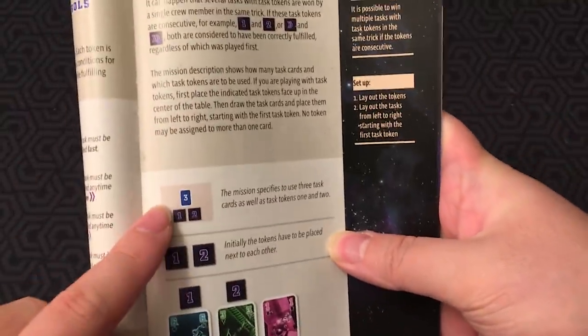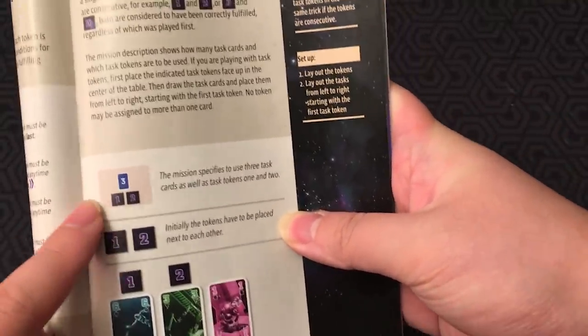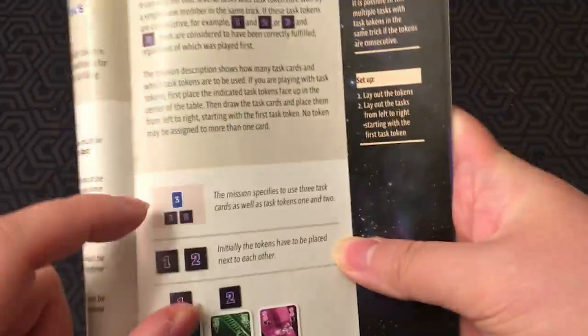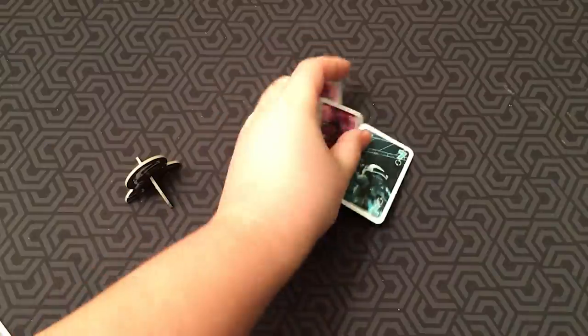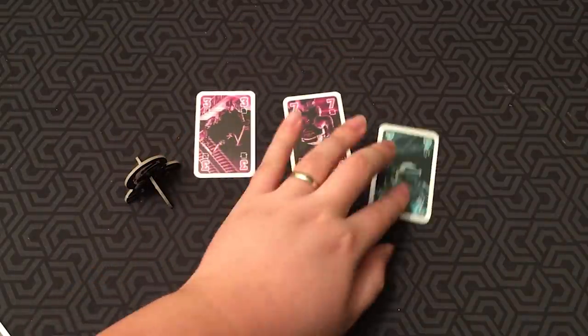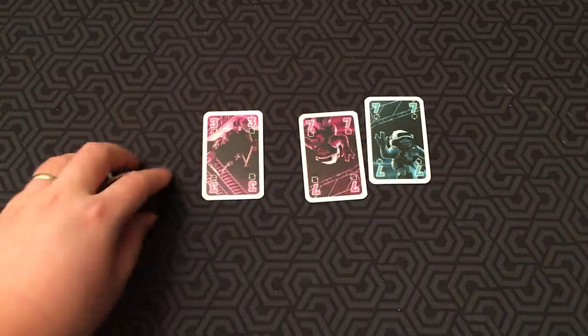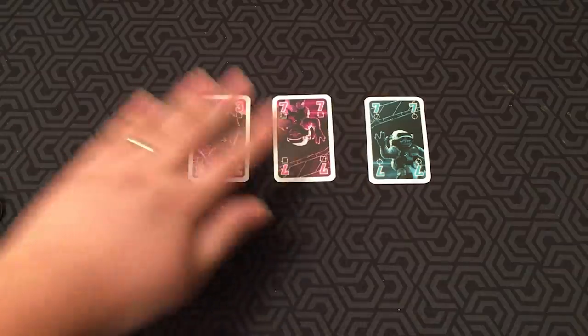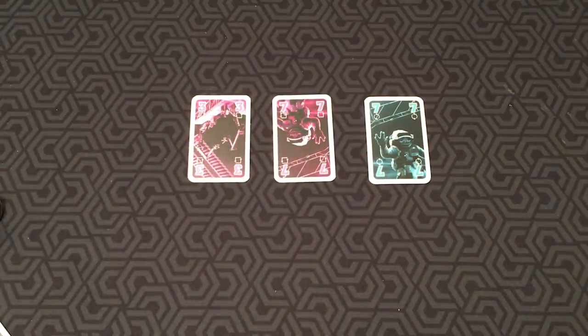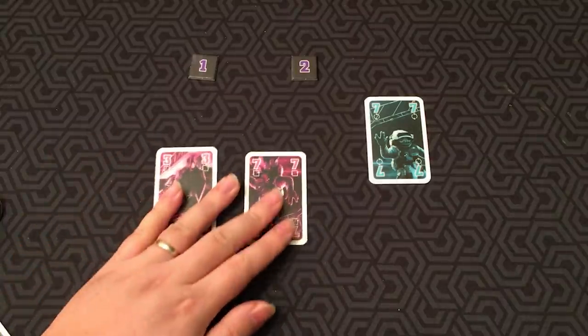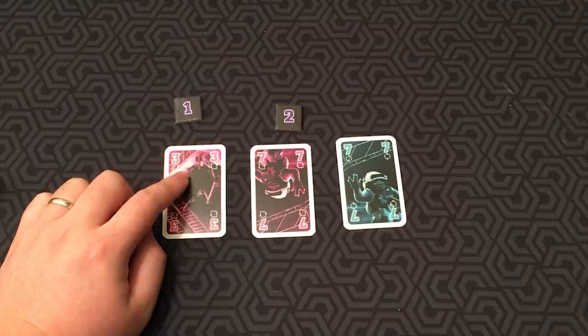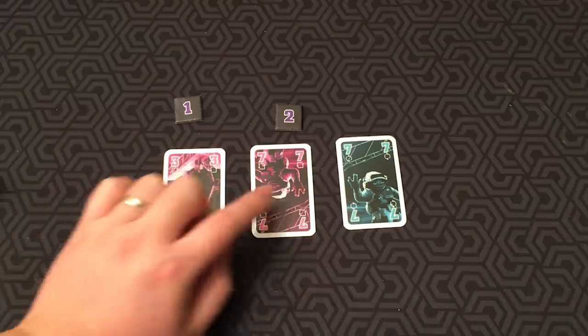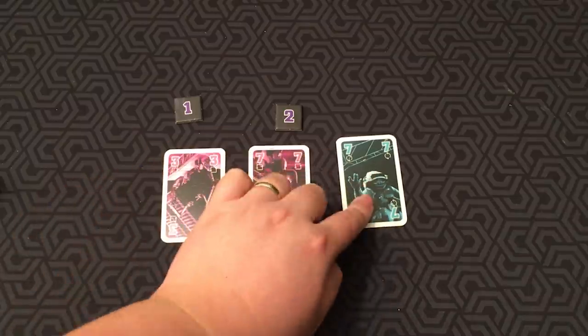Now, if you look here, symbols will tell you in the mission guide how to set up a mission. So this blue card symbol here means you need three task cards. And the task tokens will tell you in what order tricks need to be taken, like so. So what this means is that this card needs to be won first, then this card, then this card.